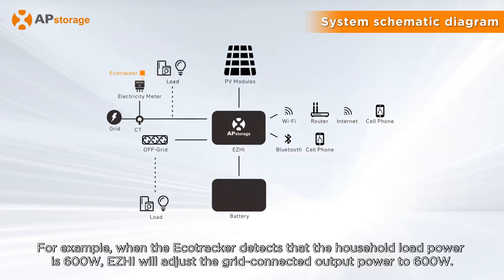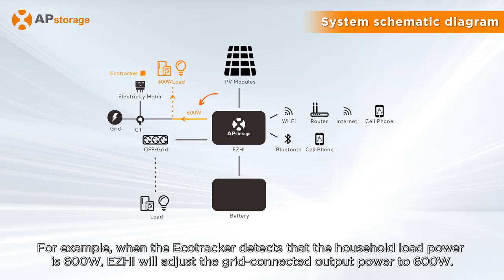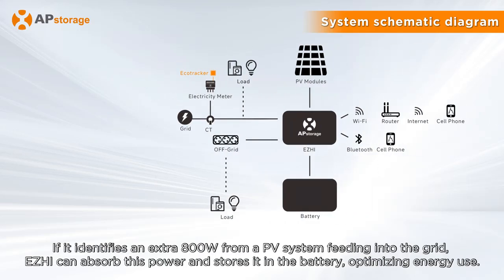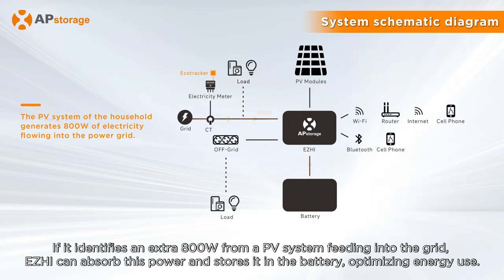For example, when the Echo Tracker detects that the household load power is 600 watts, Easy High will adjust the grid-connected output power to 600 watts. If it identifies an extra 800 watts from a PV system feeding into the grid, Easy High can absorb this power and store it in the battery, optimizing energy use.